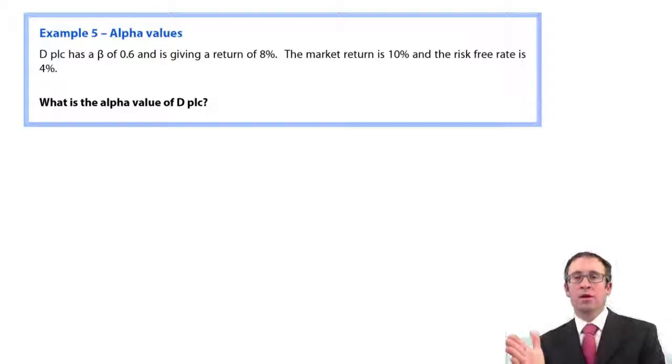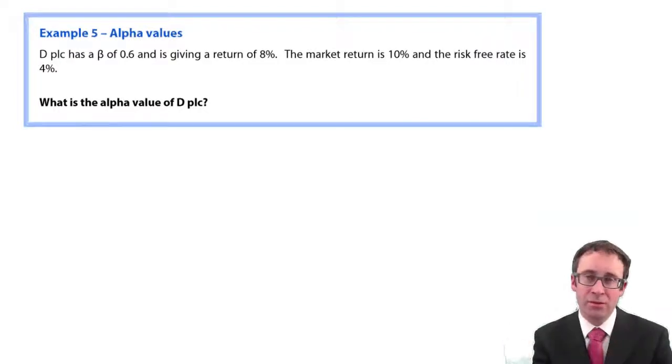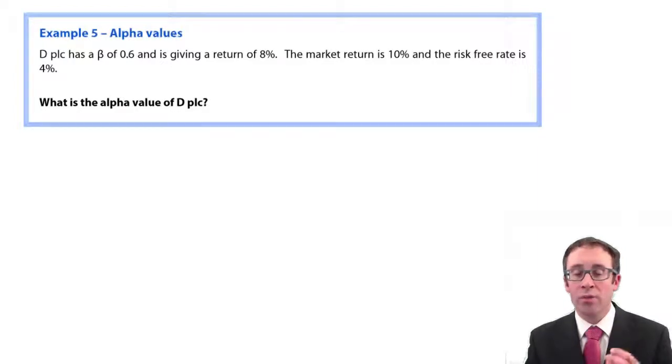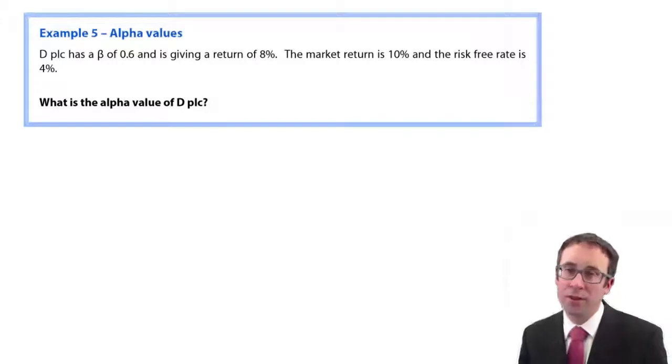So we work out the theoretical compared to the actual, which would have to be given to us in the question and you get the difference. As well as knowing what the alpha value is in terms of how to calculate it, you would also then be expected to interpret it.